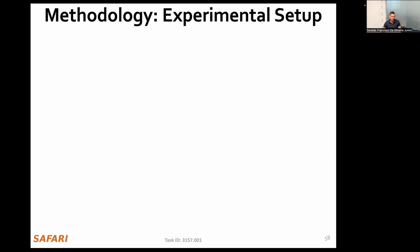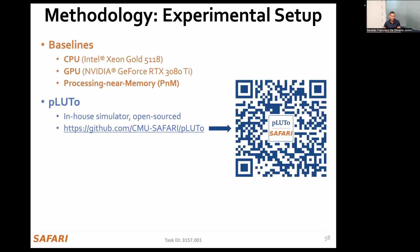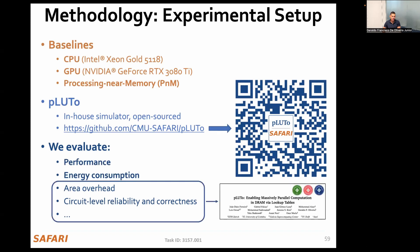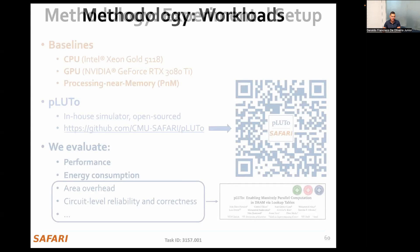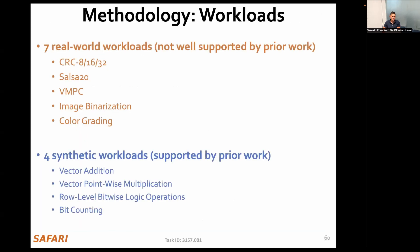Next, I'm going to summarize our evaluations. We compare Pluto with three baselines: a CPU, a GPU, and a processor-near-memory system. We implement Pluto using an in-house simulator, which is available in our GitHub repository. We evaluate several different metrics, including performance, energy consumption, area overheads, and circuit-level reliability. Due to time limitations, I'm going to cover only a subset, focused on performance and energy efficiency. We use seven real workloads and four synthetic workloads in our analysis.